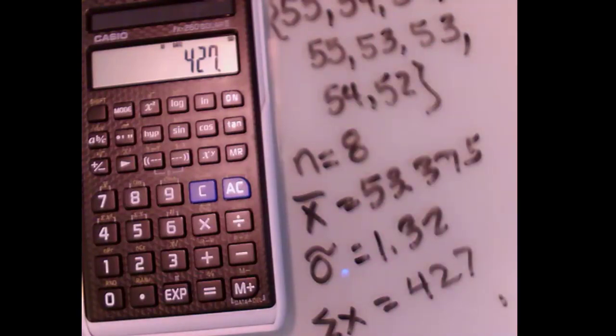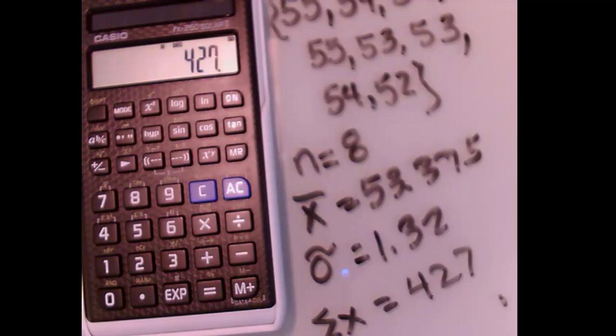So that's a quick show of how you can do some simple statistics right there with this 260 solar Casio calculator.